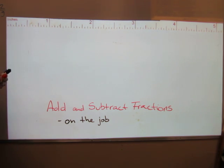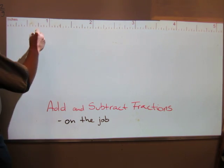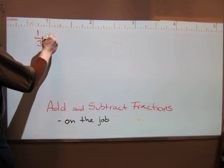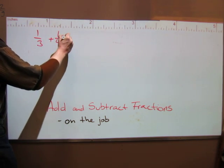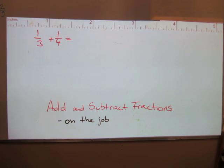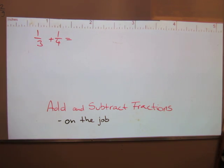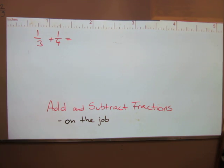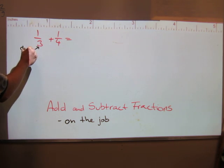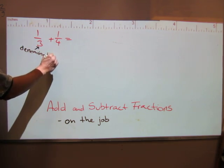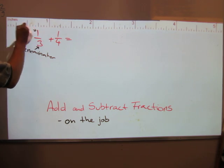Let's get started with the standard procedure. Let's add the fractions one-third and one-fourth. These fractions cannot be added as they are because they are in different formats — they have different denominators. The bottom number is the denominator and the top number is the numerator.